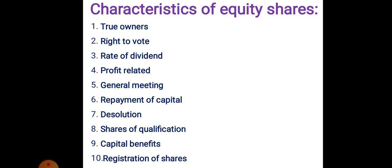Eighth characteristic: shares of qualification. When the director has given consent and there is a provision in the memorandum of association, shares will be given to directors and those shares are considered as shares of qualification. So that director would also be considered an equity shareholder.